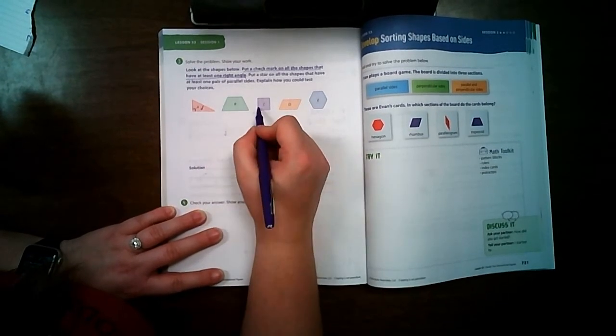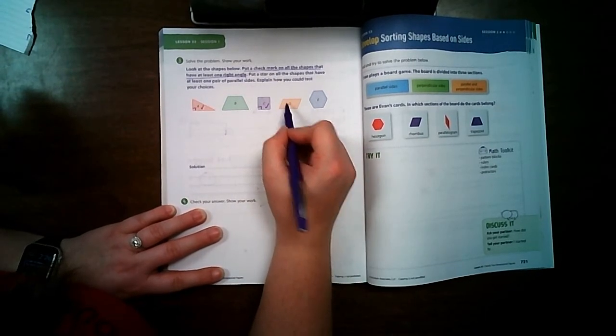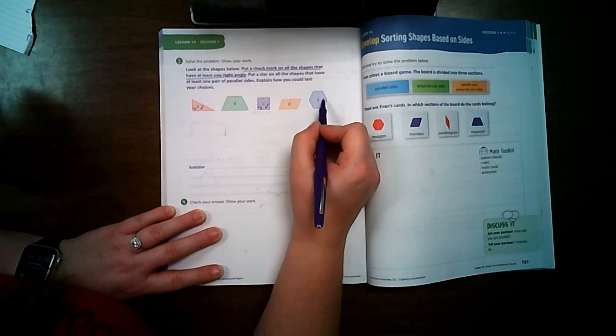Those don't have squares. That one's a square, so check that one. That's acute. That's obtuse. These are all obtuse. Okay?